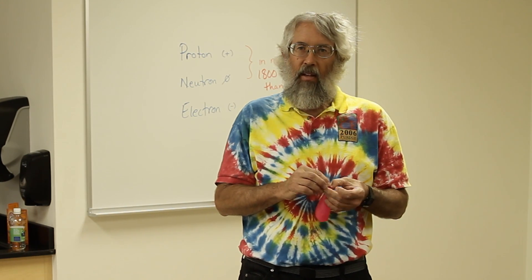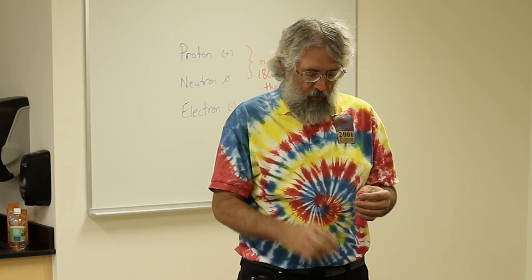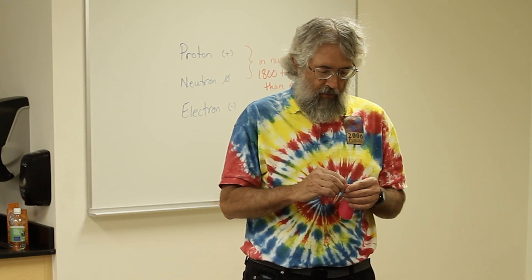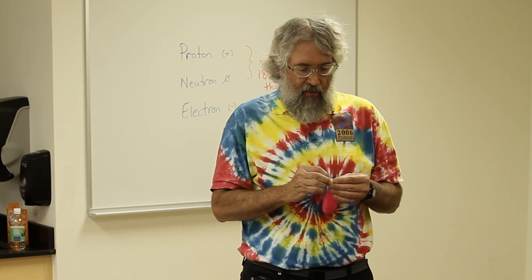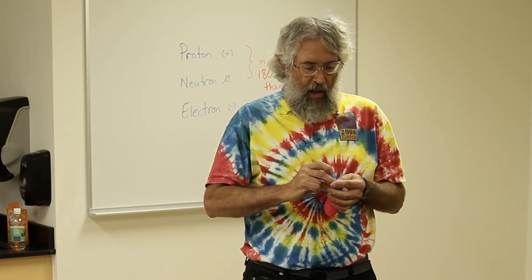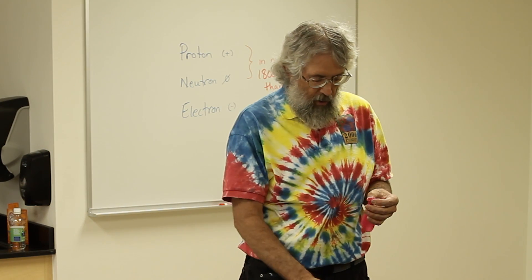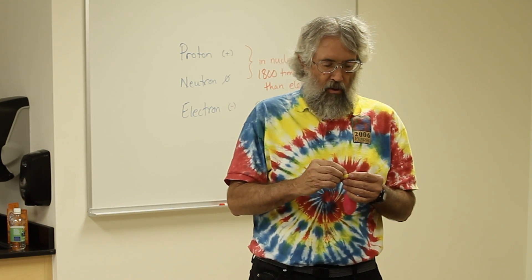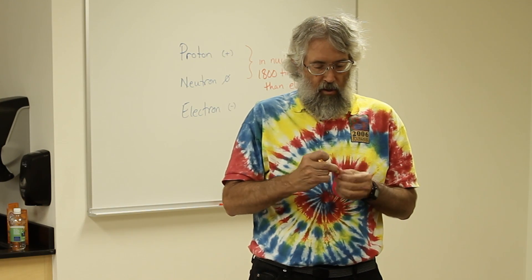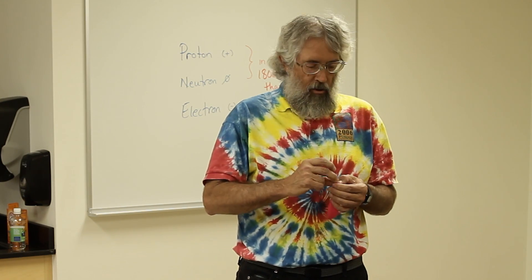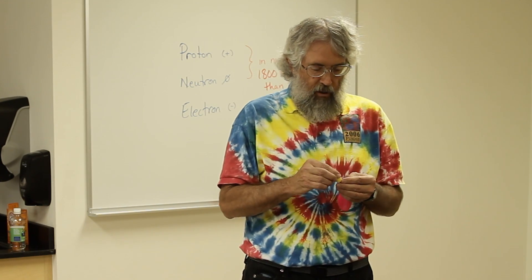We're going to make a model of the element beryllium, which has four protons, five neutrons. So we'll use these yellow pom-poms, the larger pom-poms, to represent the protons. The orange pom-poms, the orange larger pom-poms, to represent the neutrons.